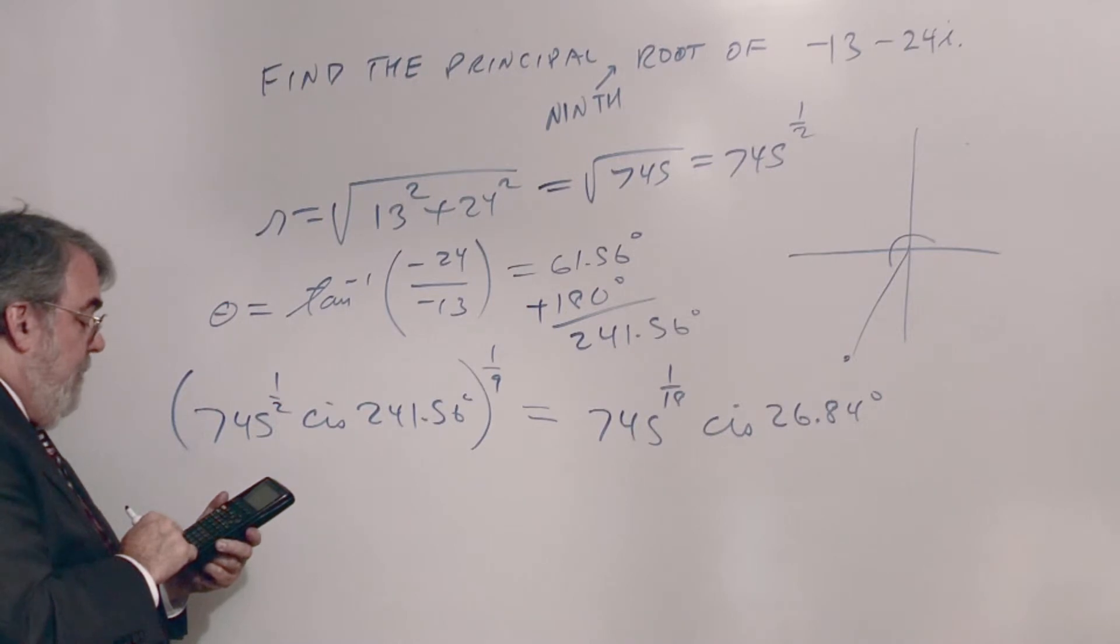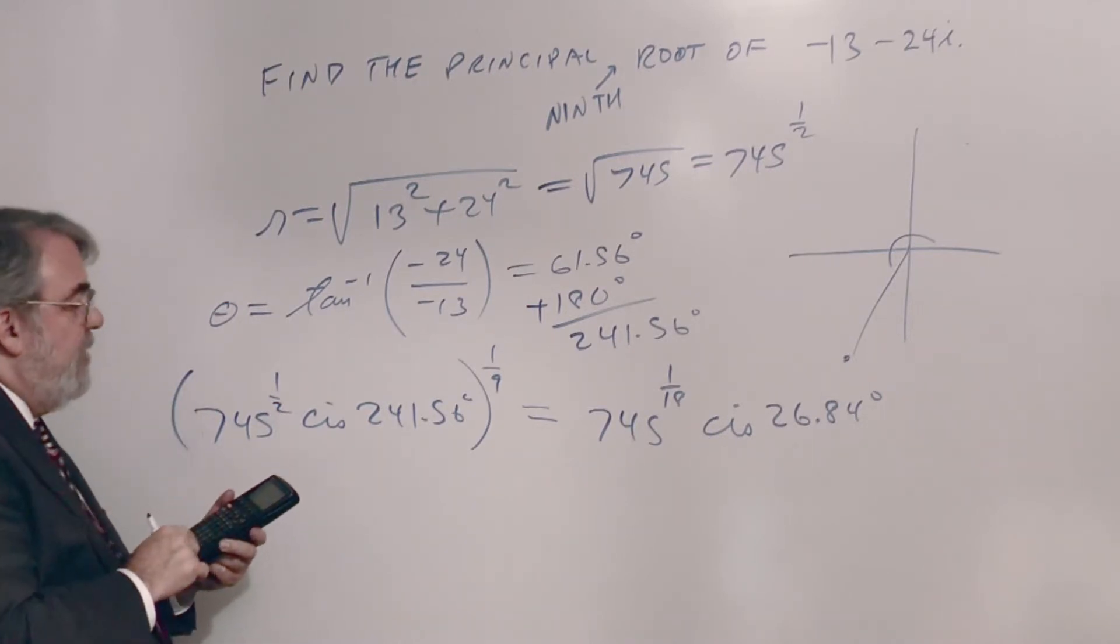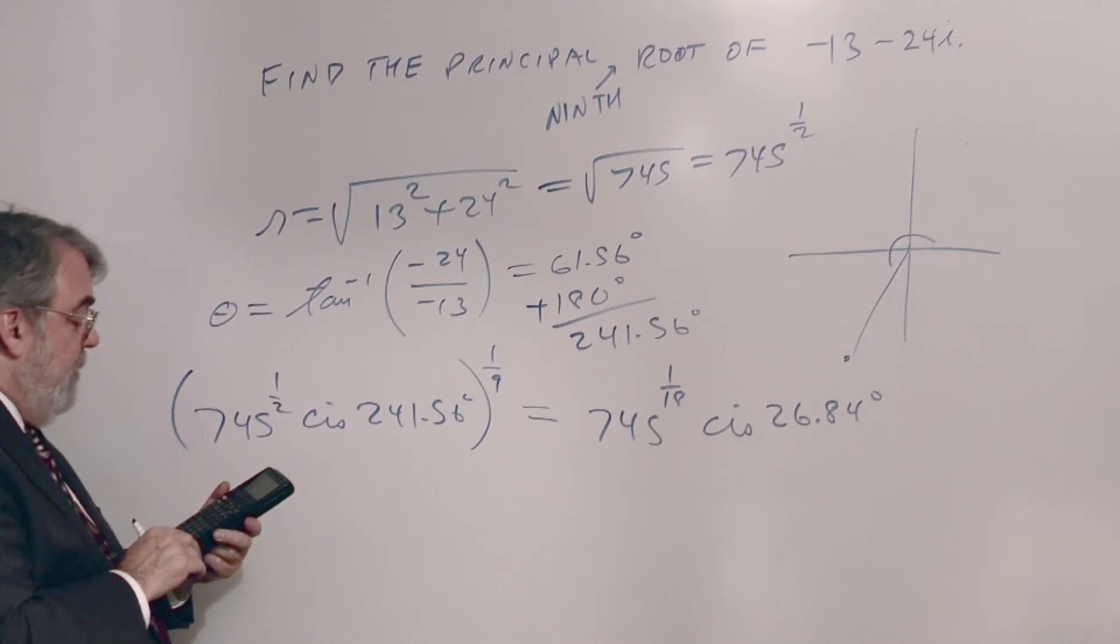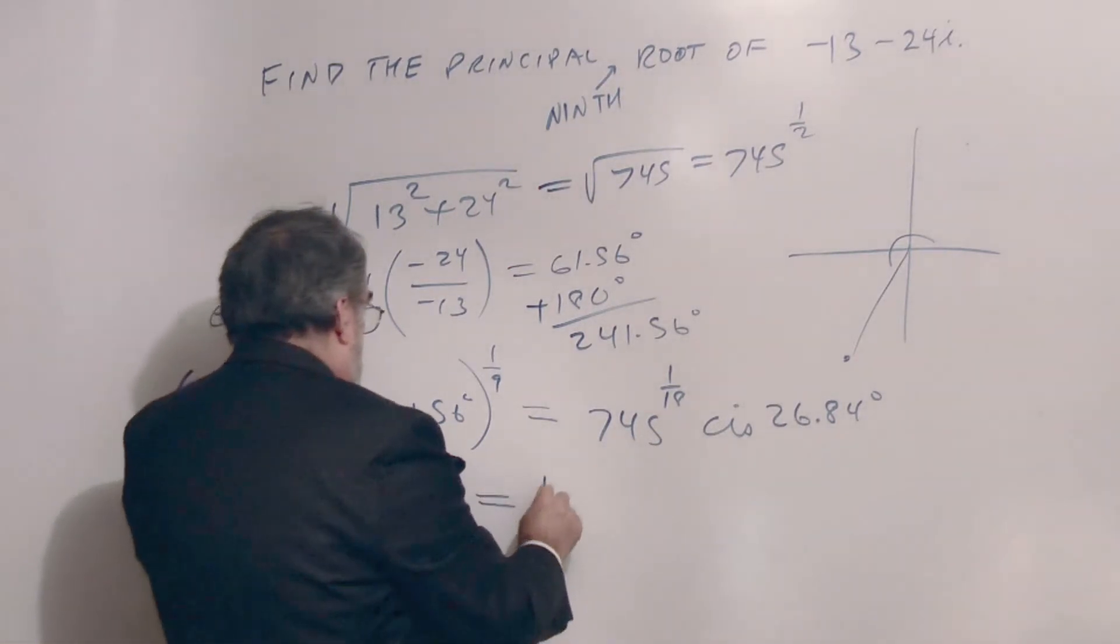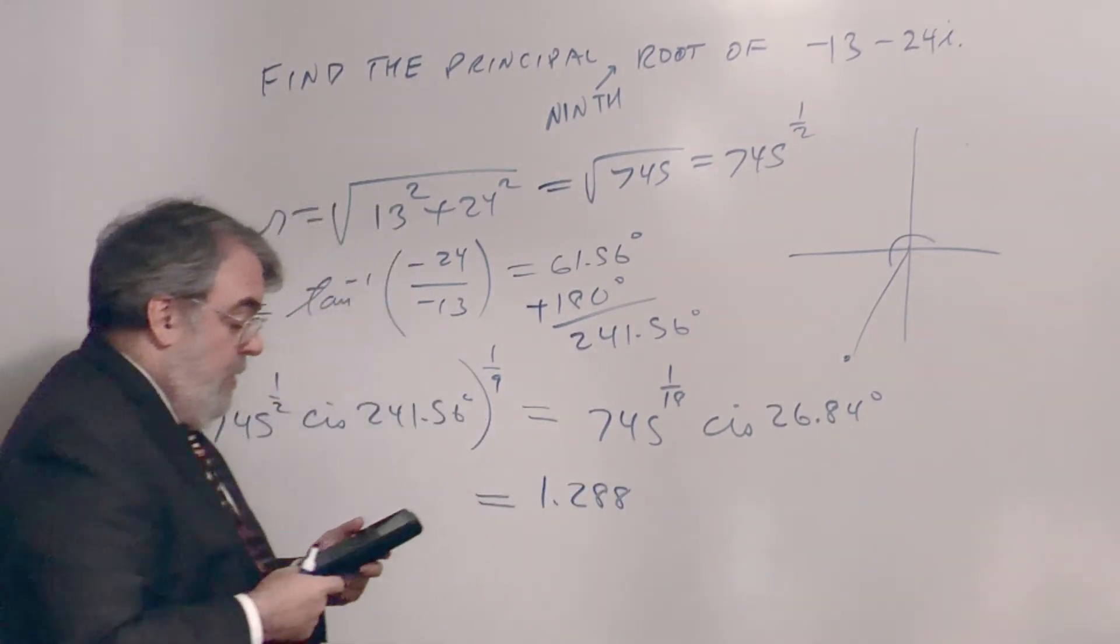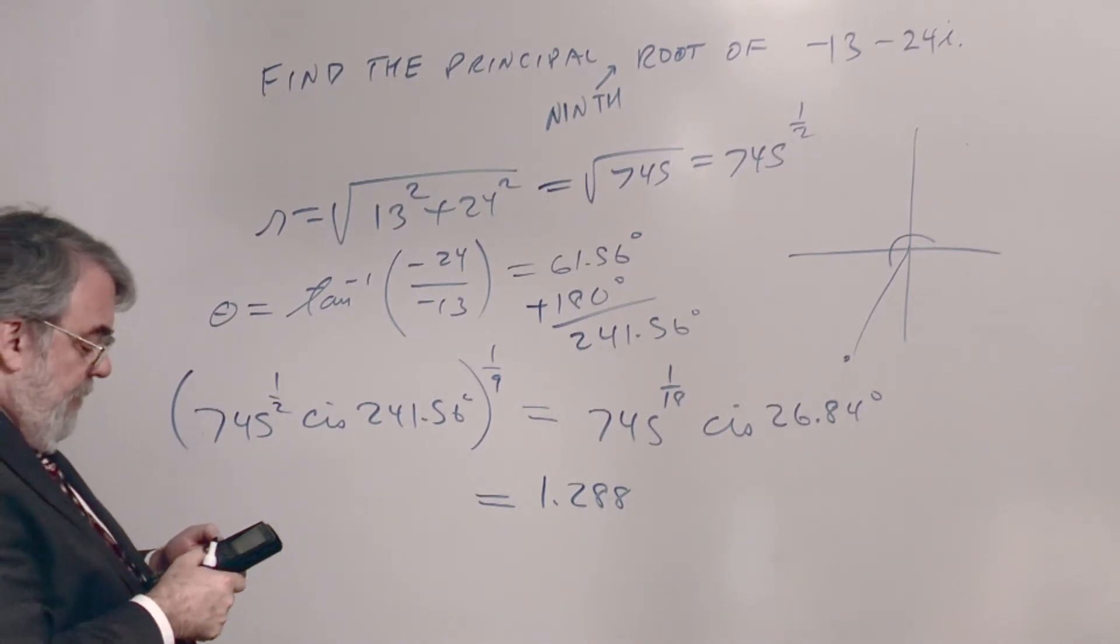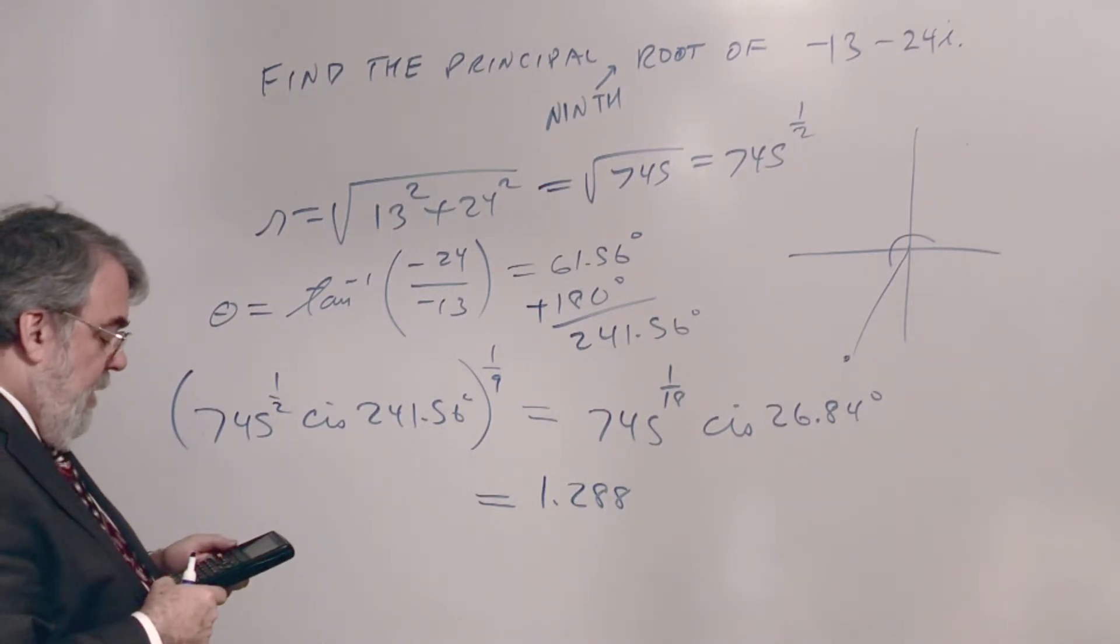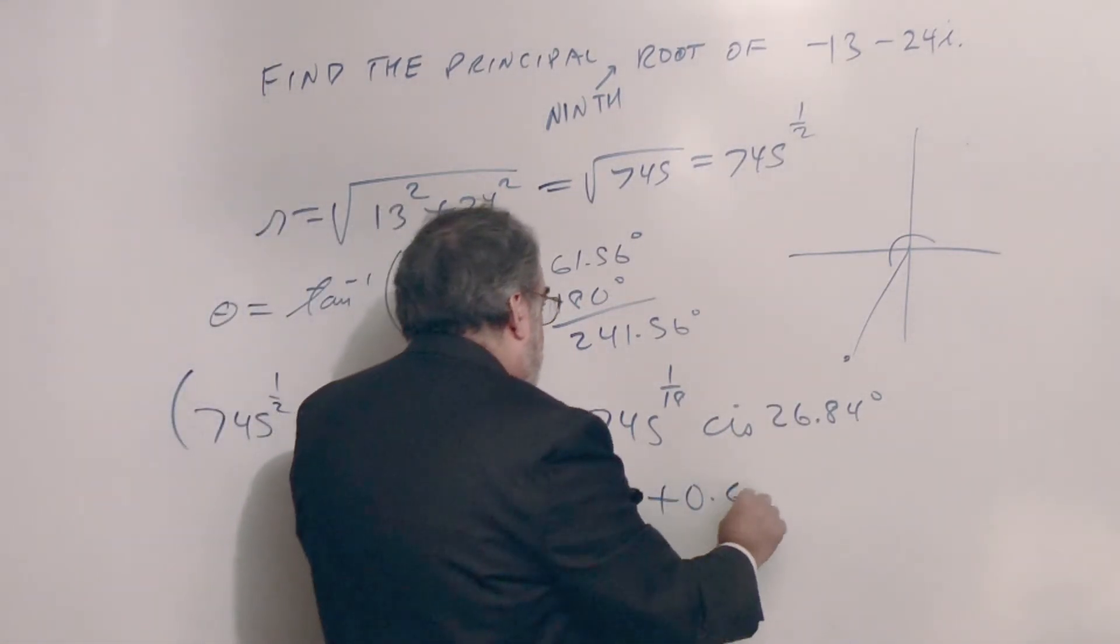Cosine - and I'm using my X because X is 26.84 degrees on my calculator - and I get 1.288. And then I'll go back and I'll change that cosine to a sine, and I get plus 0.6524.